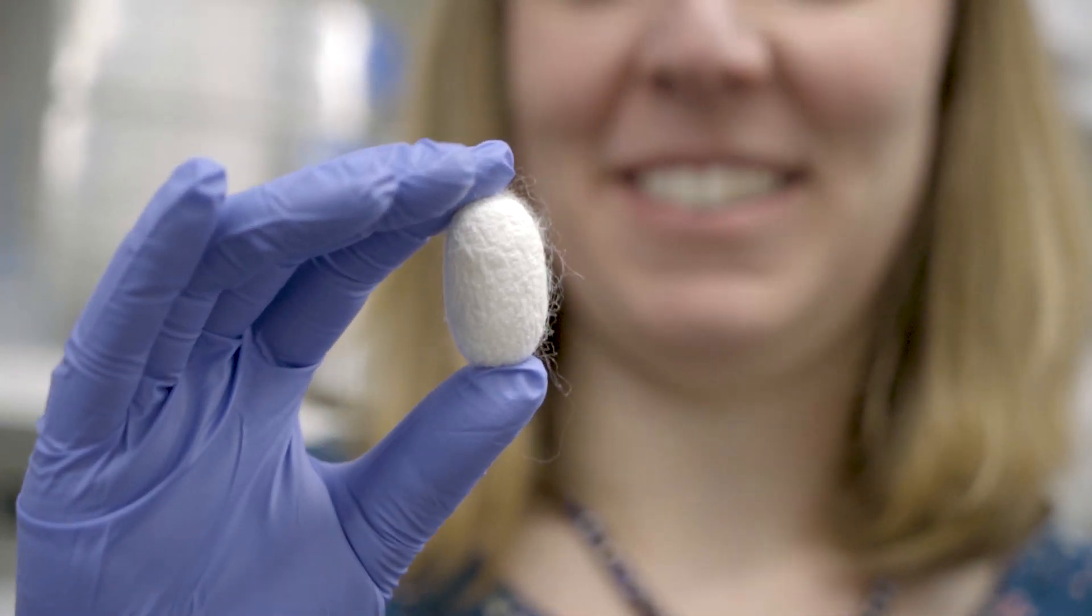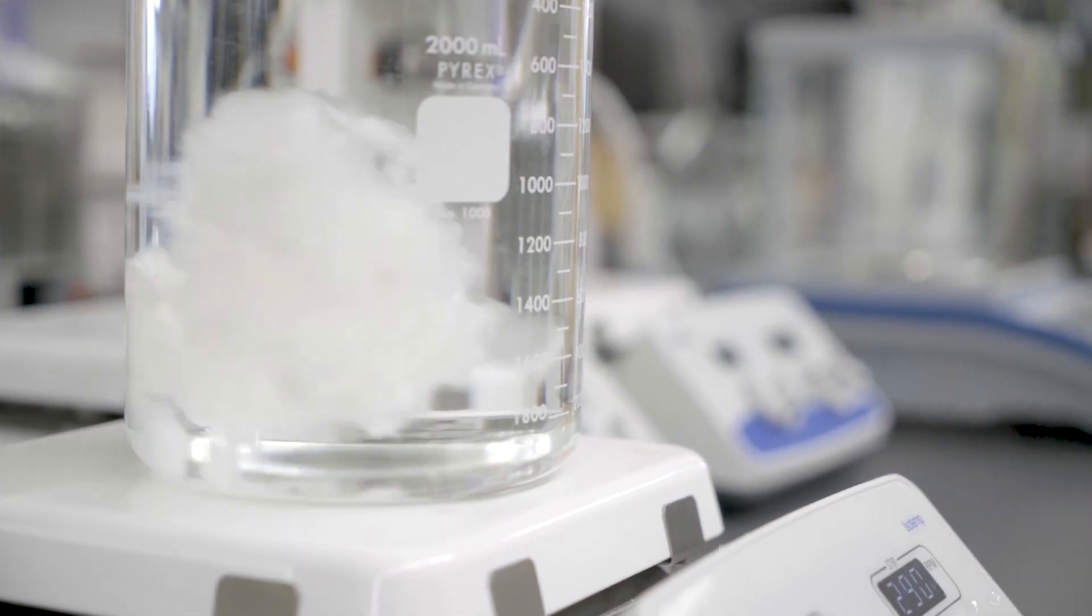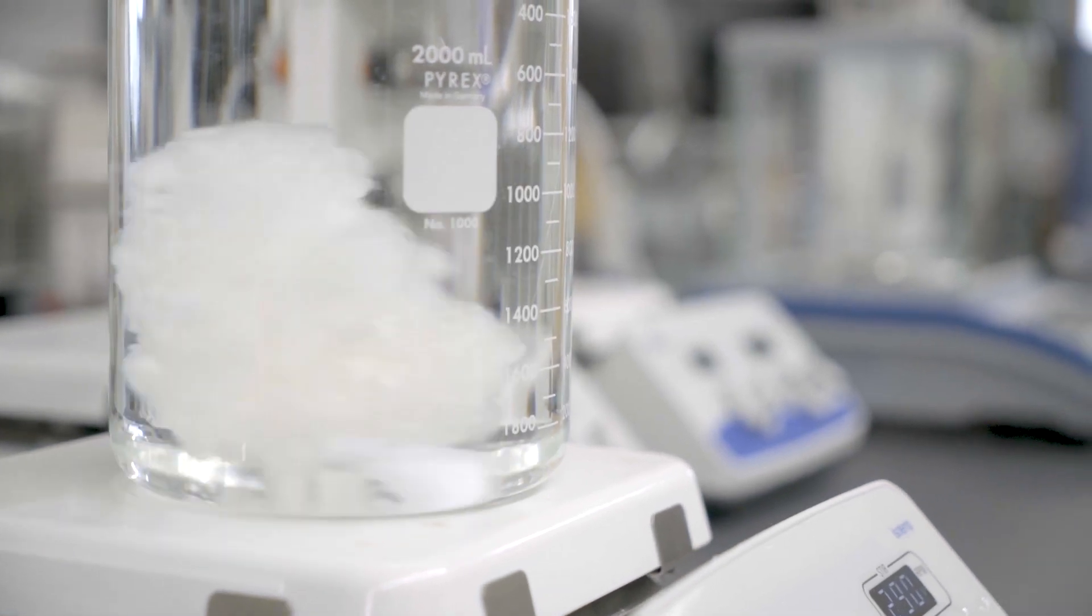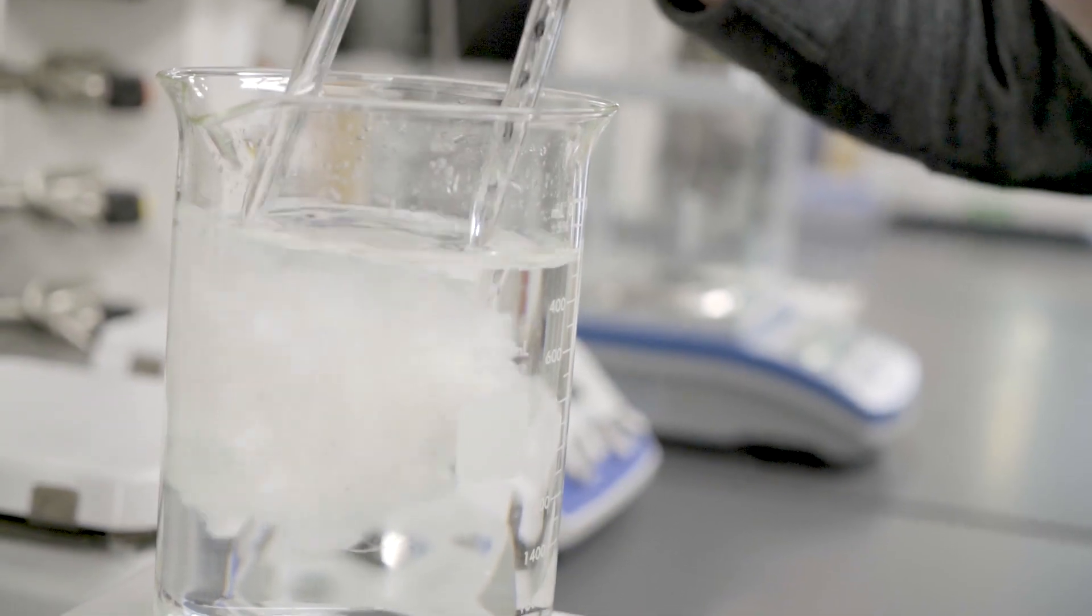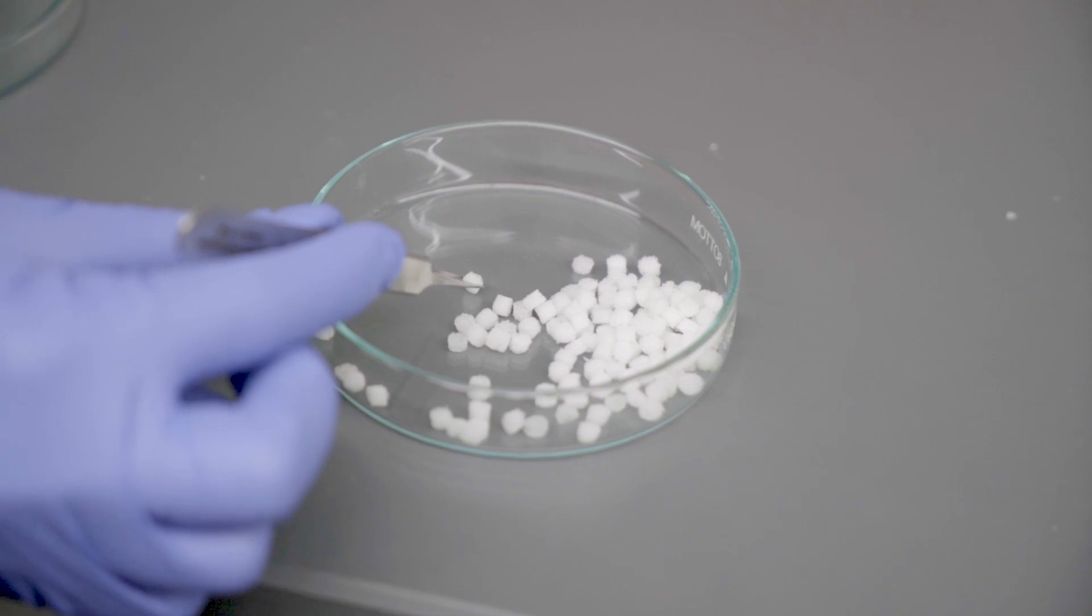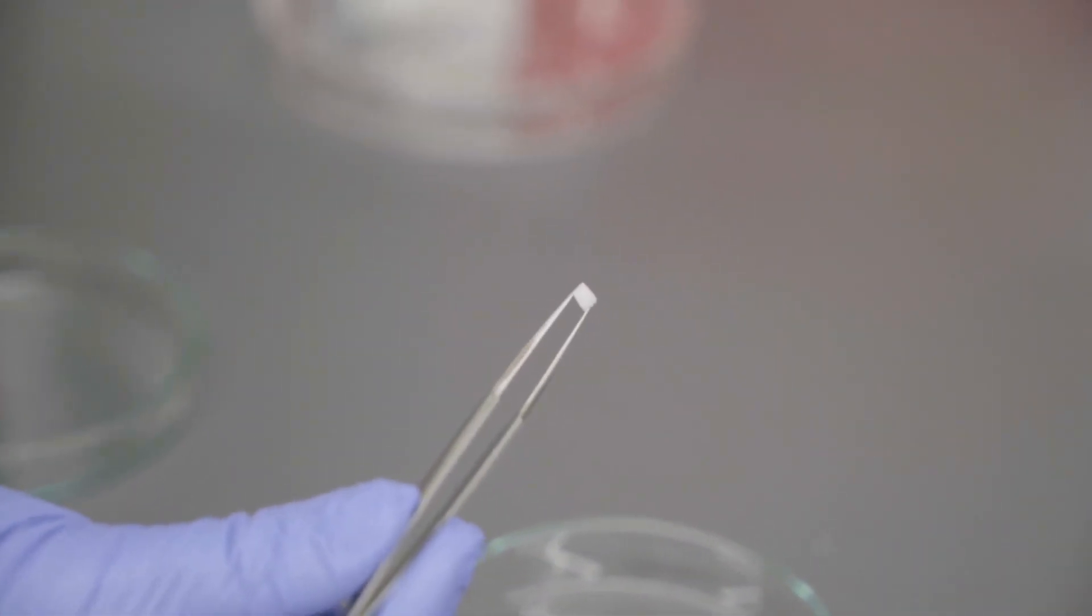We extract the silk from the cocoons of silkworms and then we use it to create a porous 3D sponge for the cells to live in.